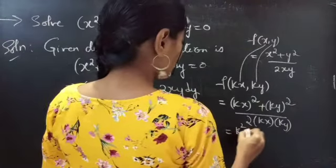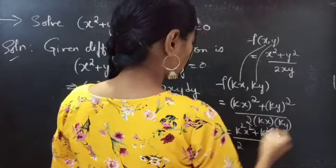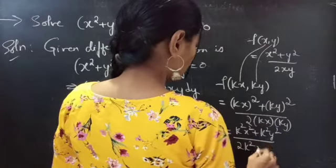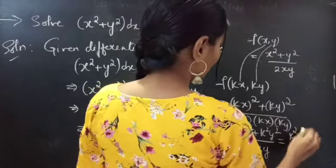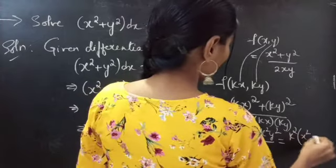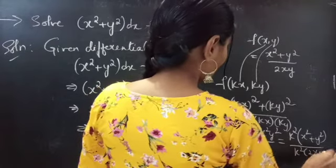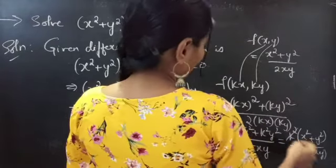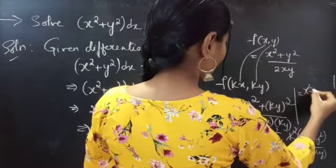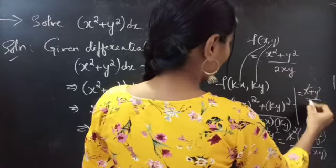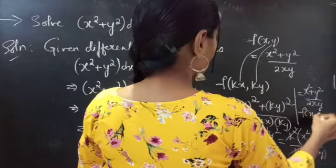This equals to k squared x squared plus k squared y squared by 2 into k into k squared into xy. We can take k squared common from the numerator, giving k squared times x squared plus y squared by k squared times 2xy. The k squared gets cancelled, leaving x squared plus y squared by 2xy, which is f(x, y).